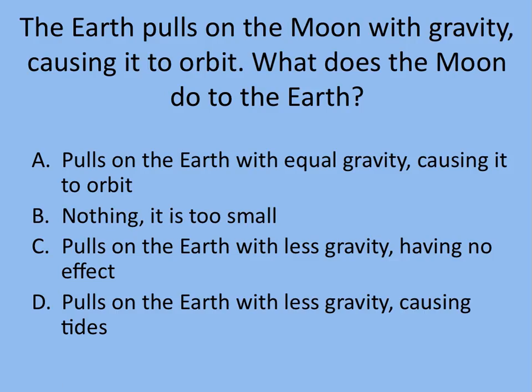How about this? If Earth pulls on the Moon with gravity, causing it to orbit, what does the Moon do to the Earth? Pause this, read the choices, think about it, pick your answer. And so the Moon pulls on the Earth with equal gravity, causing it to orbit. You might have picked that it's pulling on the Earth, causing tides. That's true, but it doesn't pull on the Earth with less gravity. The tides are really caused by the difference in the strength of gravity from the Moon on either side of the Earth. It has to be equal, causing it to orbit. Orbit what? Well, let's take a look.